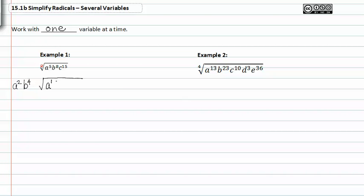So b to the fourth is what can come out of the radical. What's left over is zero, there's a remainder of zero. c is to the fifteenth or it's c multiplied to itself fifteen times.